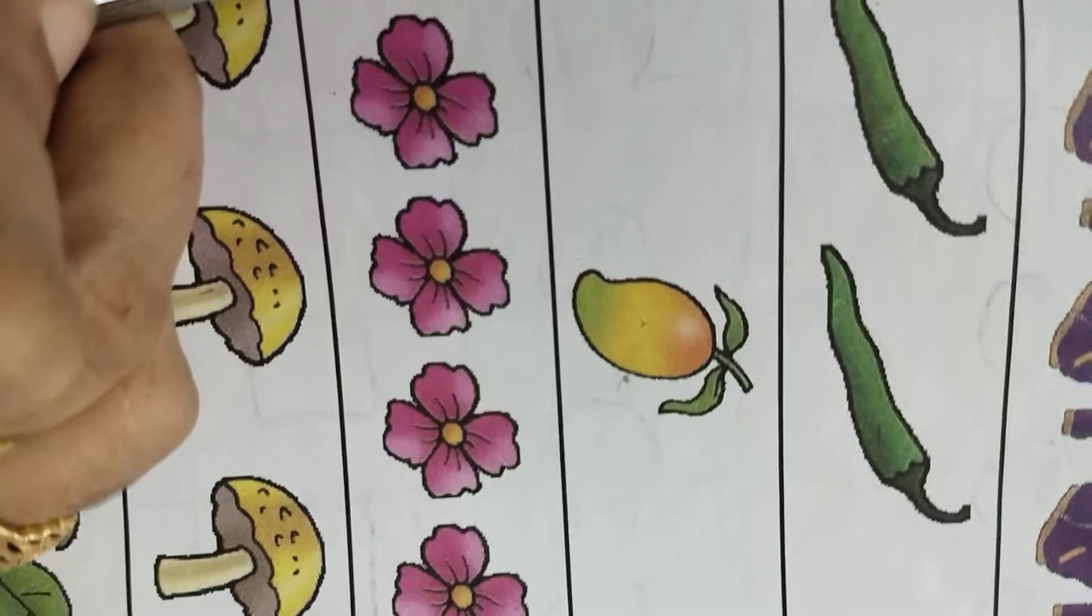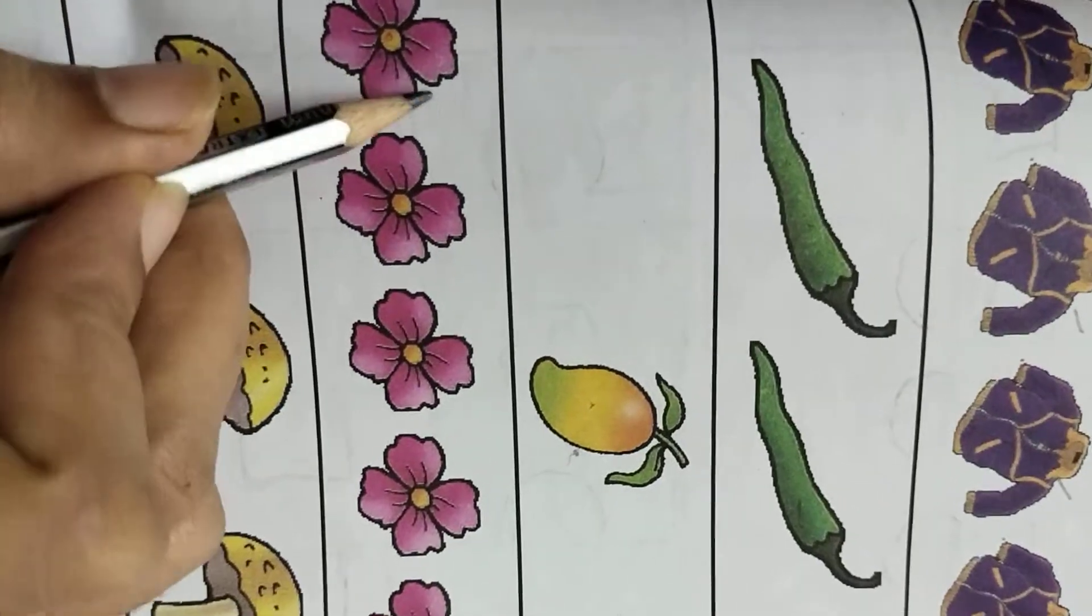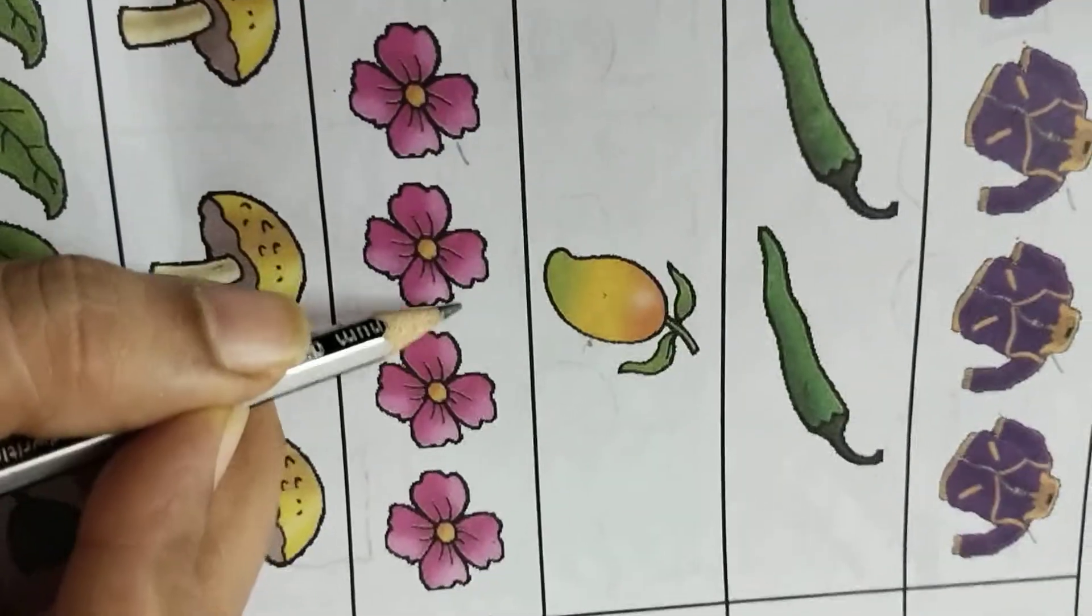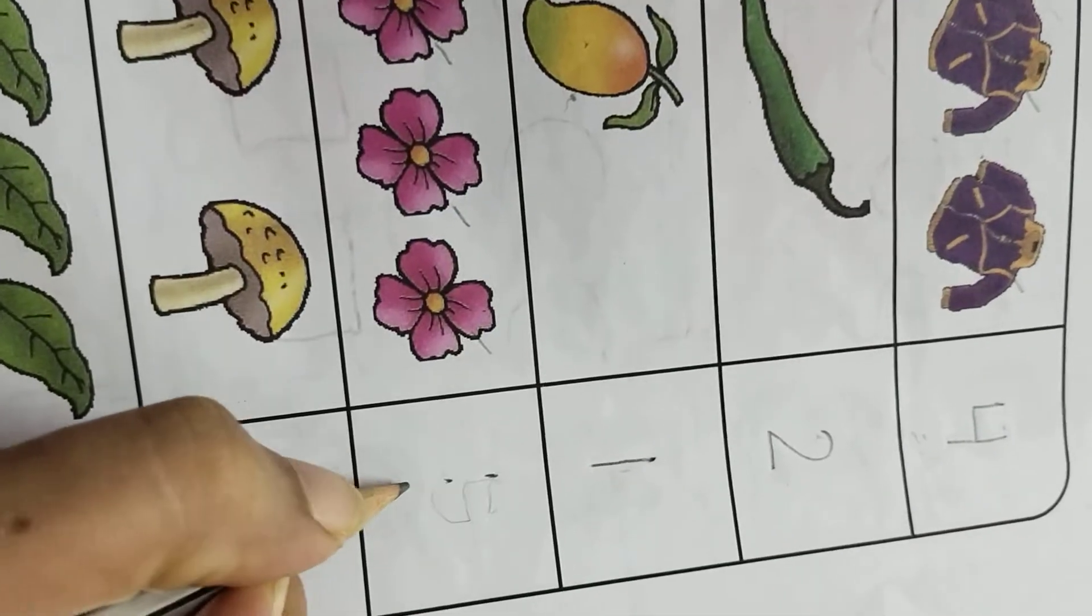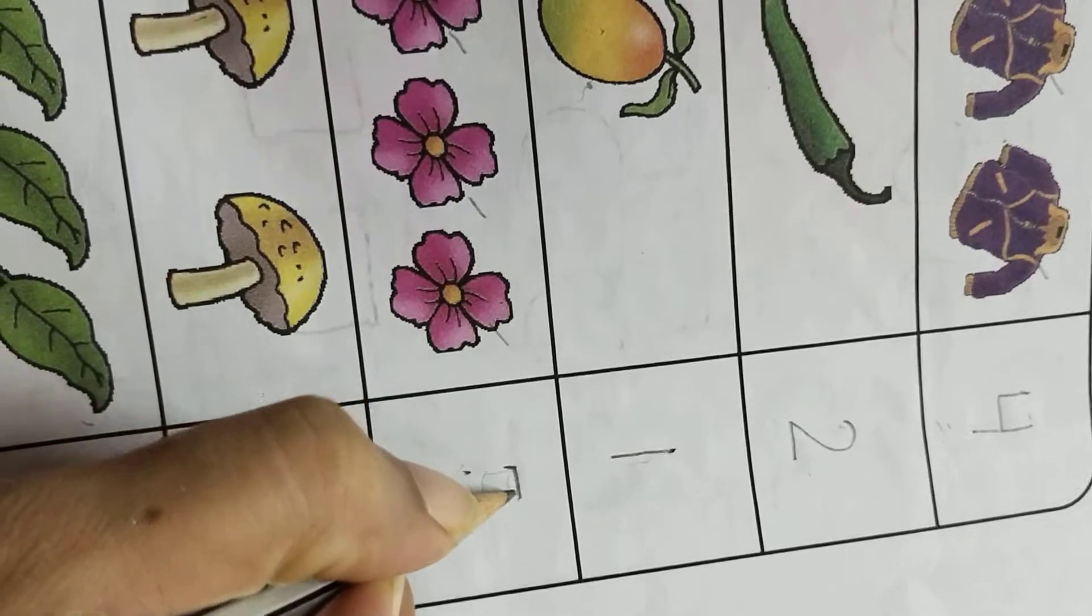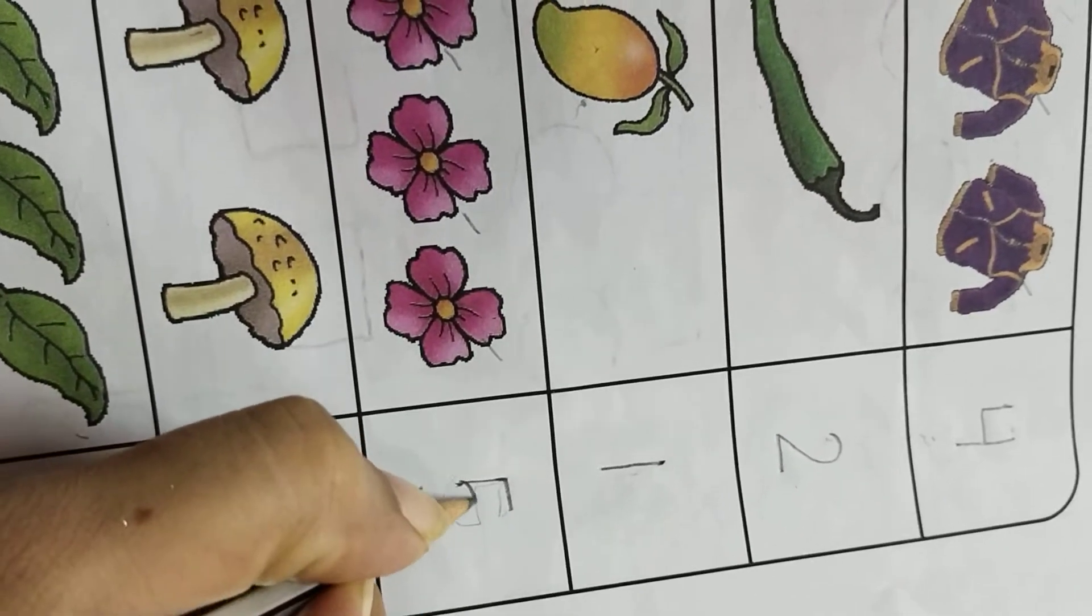Okay, next. How many flowers are there? Count it. One, two, three, four, five. So you will write here number five.